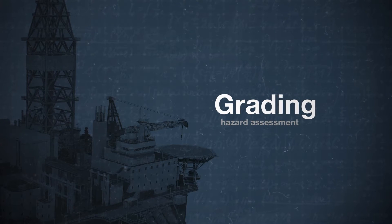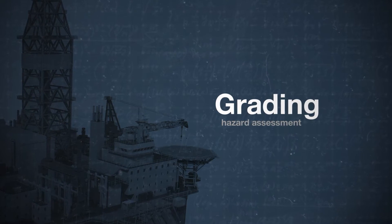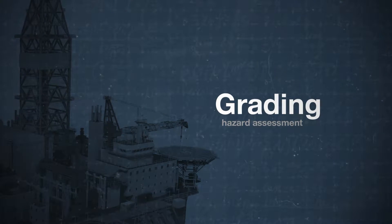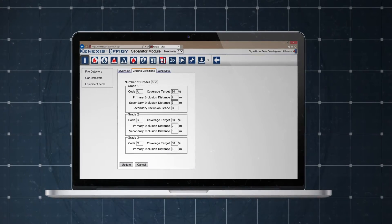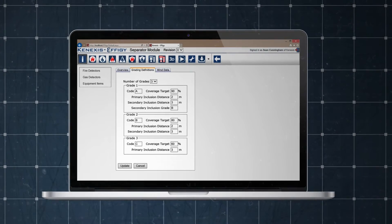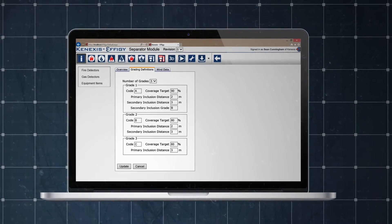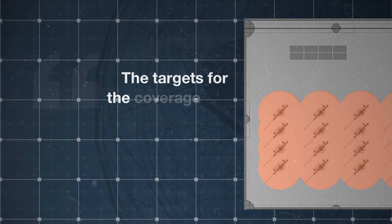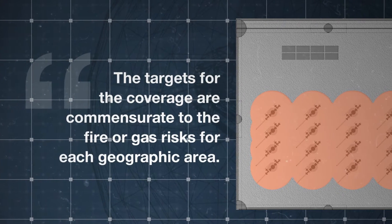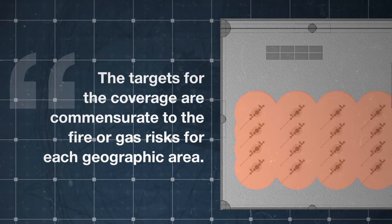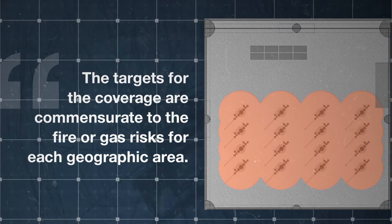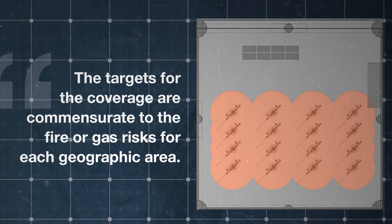A hazard assessment known as grading is used to set coverage targets for fire and gas detection. The process of grading ensures coverage is provided where required and that the targets for the coverage are commensurate to the fire or gas risks for each geographic area.